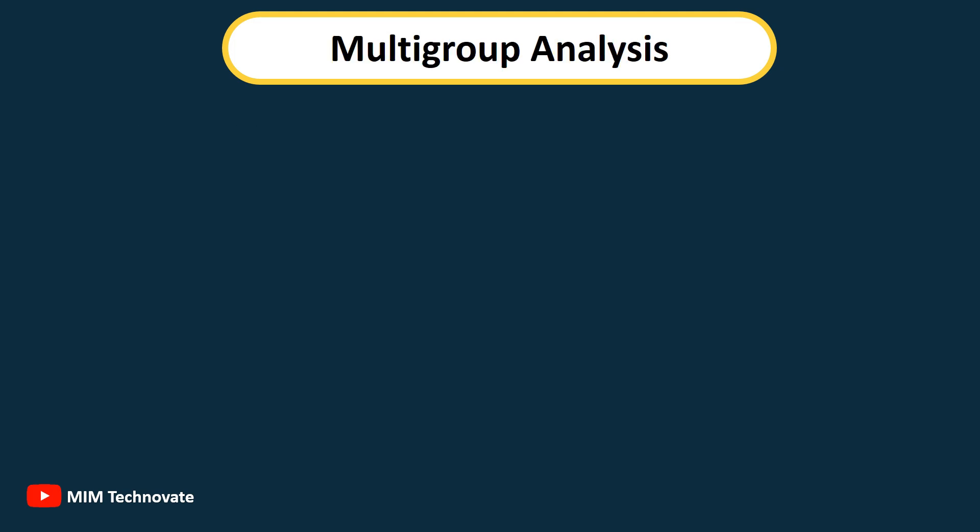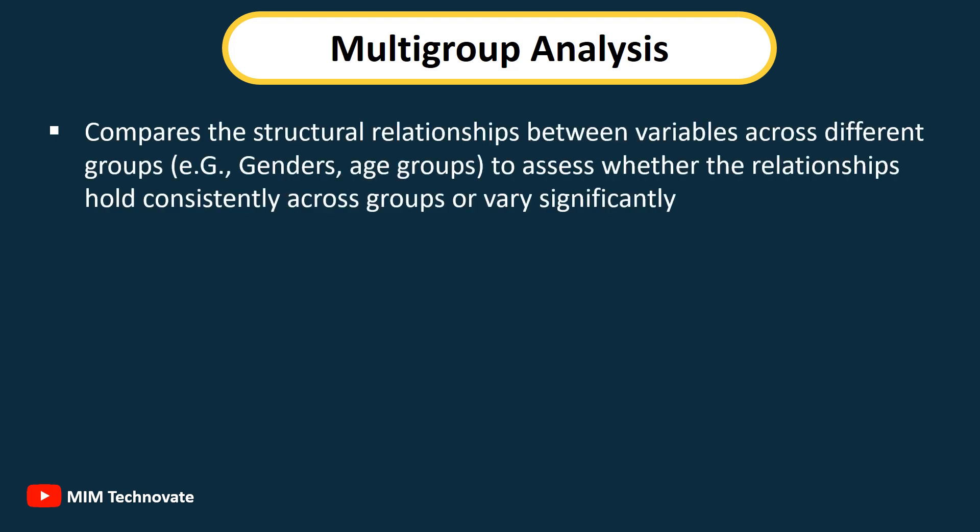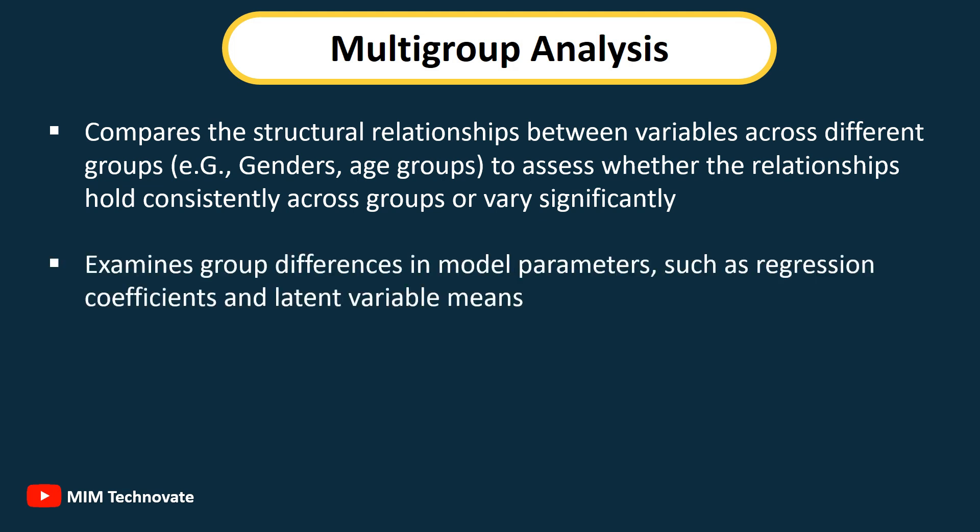Multi-group Analysis: Compares structural relationships between variables across different groups (e.g., genders, age groups) to assess whether the relationships hold consistently across groups or vary significantly. It examines group differences in model parameters such as regression coefficients and latent variable means.